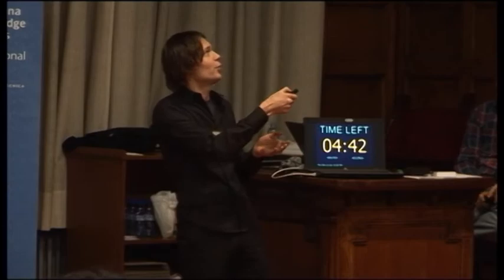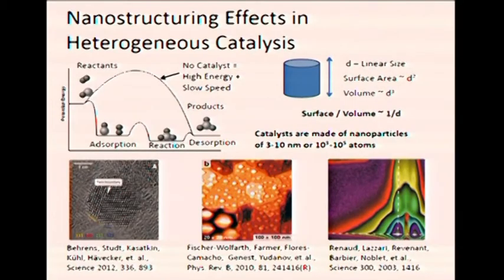First I will remind you what heterogeneous catalysis is. A catalyst is a special ingredient you add to your chemical reaction to make it some millions times faster. In the case of heterogeneous catalysis, what first happens is your reactants absorb on the surface of your catalyst, then they react, then they desorb. So for this process to be successful, your catalyst should have a lot of surface.